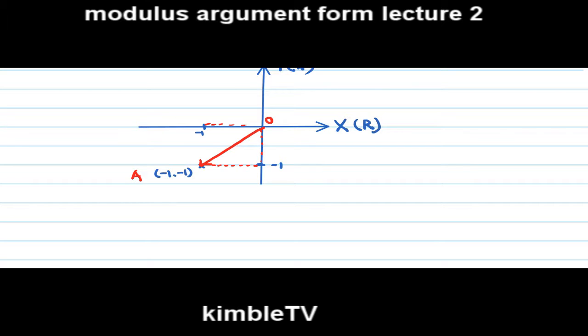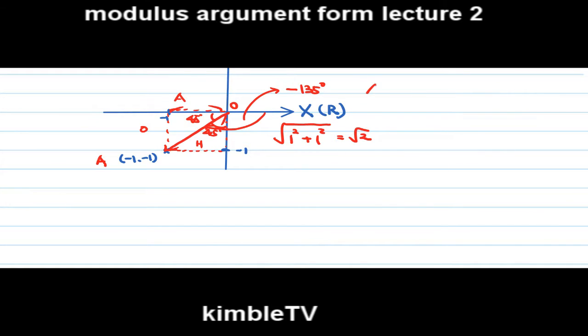This is adjacent, this is opposite, this is hypotenuse. Therefore hypotenuse length is 1 squared plus 1 squared root, which is root 2 according to the Pythagorean theorem. This angle is 45 degrees. In this case we must use this angle, therefore the argument z equals minus 135 degrees.